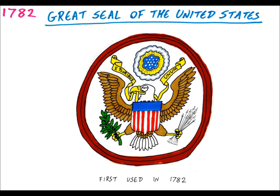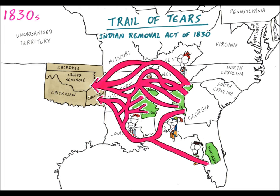Since winning their independence and ratifying their constitution, the United States of America began expanding across North America through purchase, conquest, forced migration and genocide, bringing in new territories to the Union.